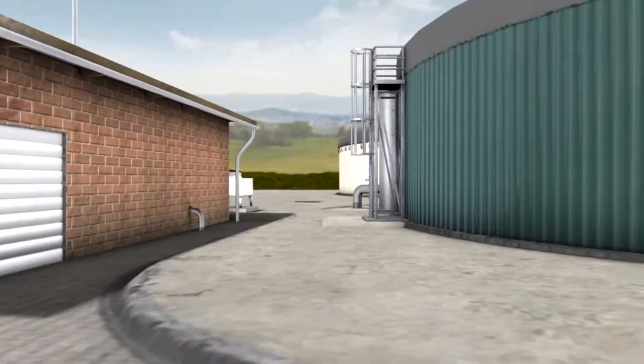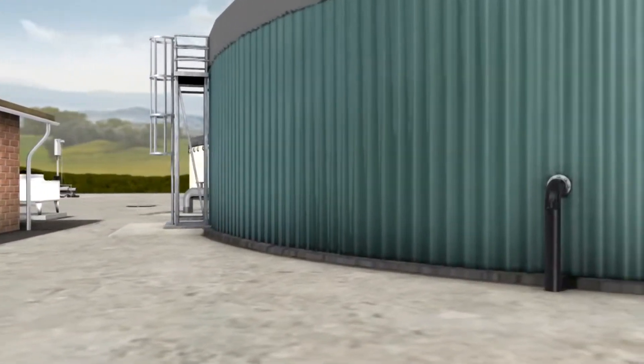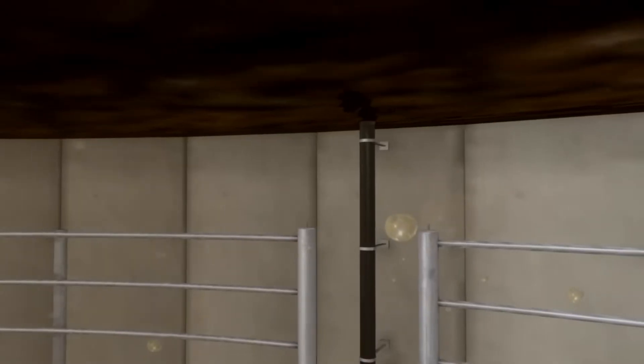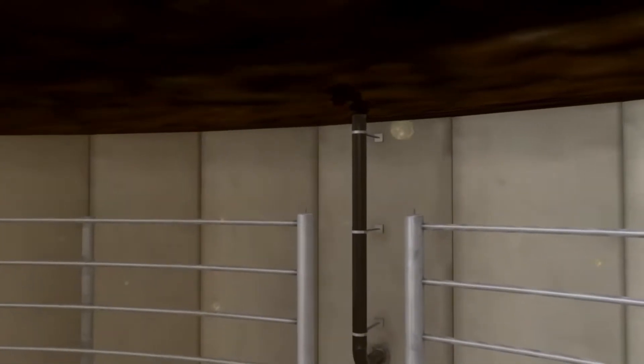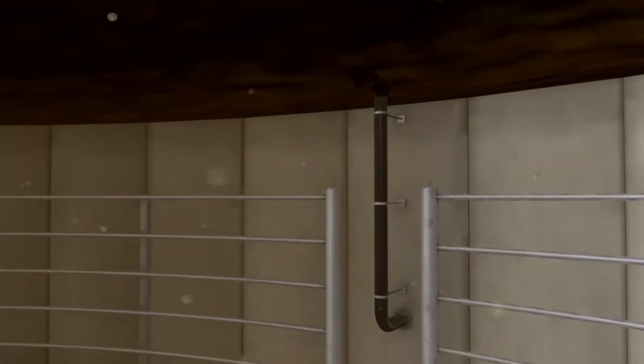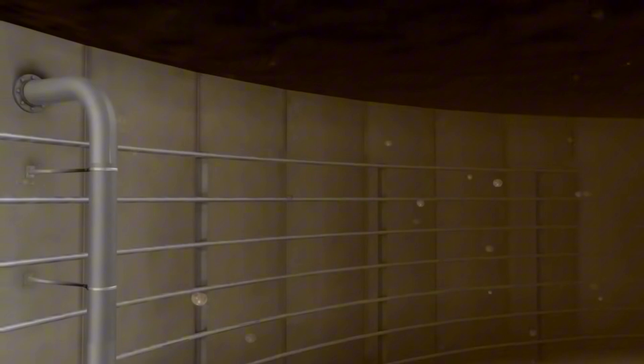The fermentation within the fermenter takes place in a hermetically sealed atmosphere. Bacteria break down individual enzymes and other components. The result is biogas. Average processing time of the raw materials in the fermenter is 60 to 70 days. The fermentation takes place in the mesophilic range at 35 to 38 degrees centigrade. The advantage of this process, as opposed to other processes, lies in the low energy expenditure and higher level of efficiency.